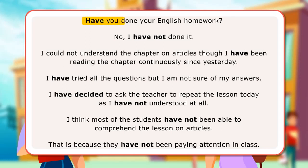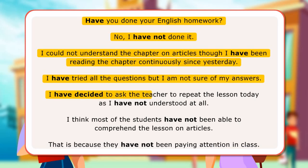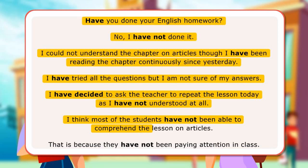In the conversation, the two girls have used 'have' as auxiliary verb to form positive sentences in present perfect and present perfect continuous tense, and 'have not' to form negative sentences. Examples: Have you done your English homework? No, I have not done it. Though I have been reading the chapter continuously since yesterday. I have tried all the questions but I am not sure of my answers. I have decided to ask the teacher to repeat the lesson today, as I have not understood it at all. Most of the students have not been paying attention in class.